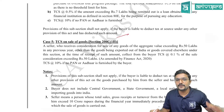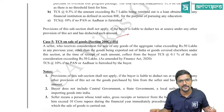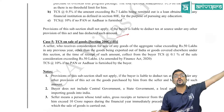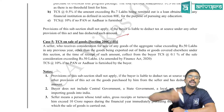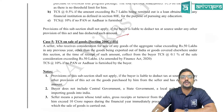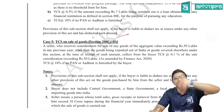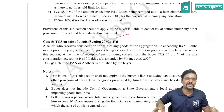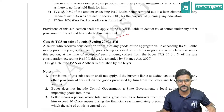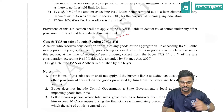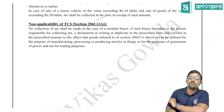The applicability of Section 206C(1H) depends on the seller — the seller collects from the buyer where the sale value is more than 50 lakh in a year and the seller's gross receipts in the last year were more than 10 crore. In that case, the seller collects TCS at 0.1% on the amount exceeding 50 lakh. But for a particular purchase of goods, if Section 194Q is already applicable, then Section 206C(1H) is not applicable for the same transaction.